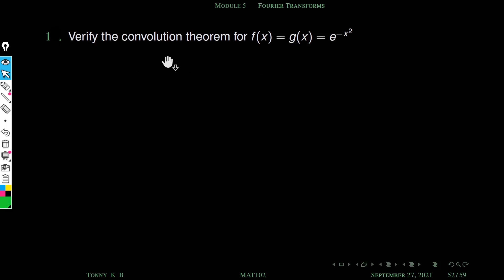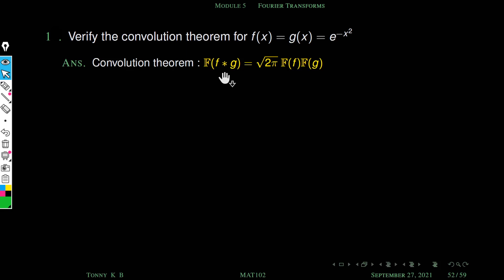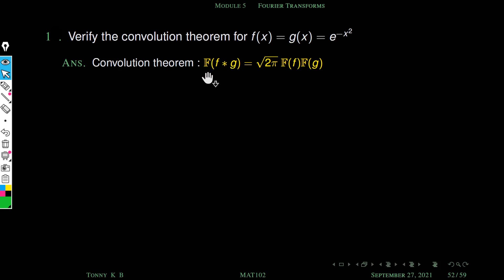Consider this problem: verify the convolution theorem for f(x) = g(x) = e raised to minus x square. Here both functions are the same. To verify the convolution theorem, we have to find both sides separately and check whether they are equal. So we find f star g and its Fourier transform, and also find the Fourier transforms of f and g separately.